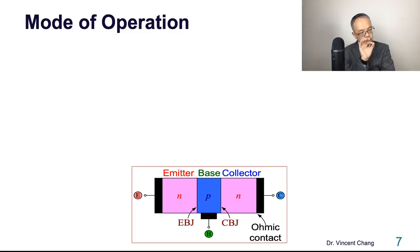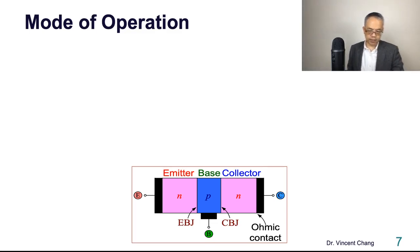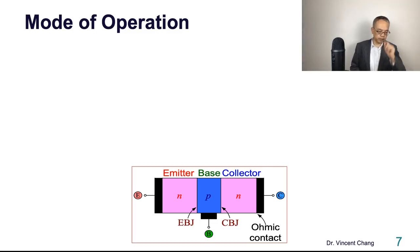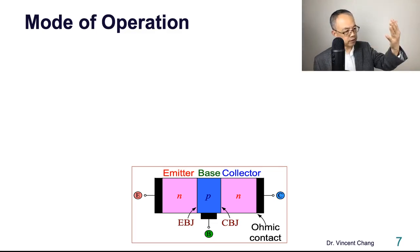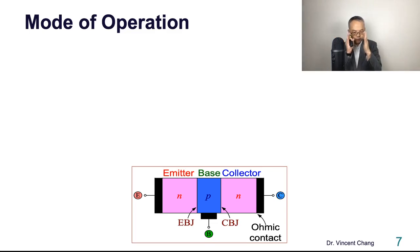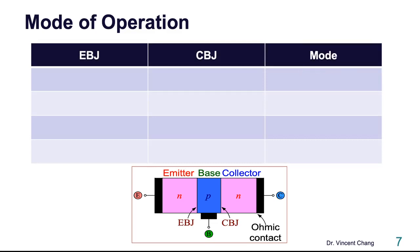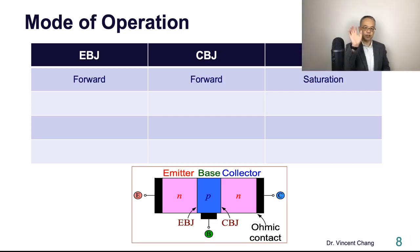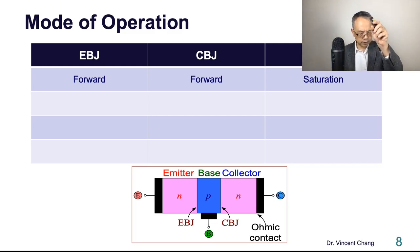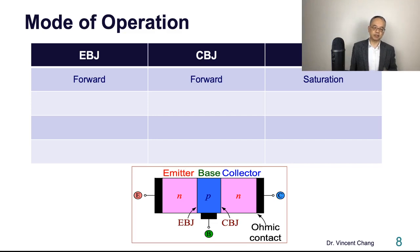One of the learning objectives for this lecture — beyond device structure and circuit symbol — is knowing the modes of operation. With two junctions, each having two possible bias states, there are four combinations. The first combination is forward-forward: when the emitter base junction is forward biased and the collector base junction is also forward biased, this is defined as the saturation mode.